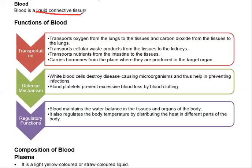Functions of blood: blood transports oxygen from the lungs to the tissues and carbon dioxide from tissues to the lungs. Both oxygen and carbon dioxide are transported. Blood also carries waste products from the tissues to the kidneys.